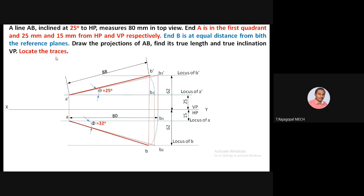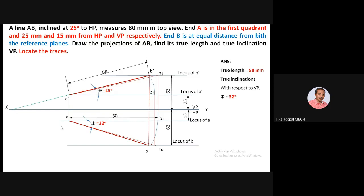True length and true inclination with VP are completed. Now locate the traces. Be careful — do not extend the true length line. Extend the projection lines: extend A-dash B-dash as a thin line until it touches the XY reference line. Similarly, extend the top view line AB as a thin line until it touches the XY reference line.